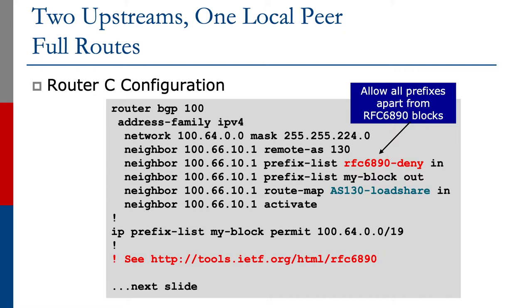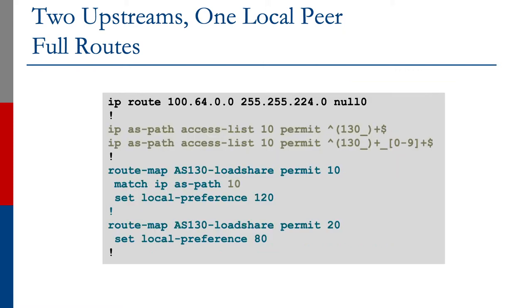Outbound, we only send our aggregate. The example also shows a route map called AS130 load share. That's not built into the router — that's something we have to configure. The AS130 load share route map looks for prefixes matching ASPathList10.